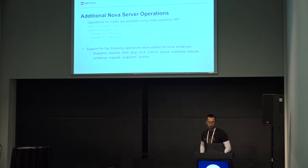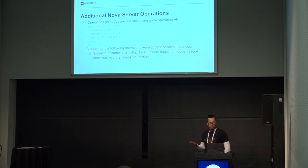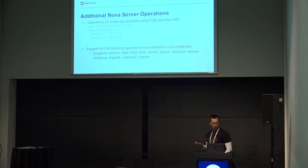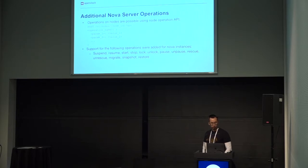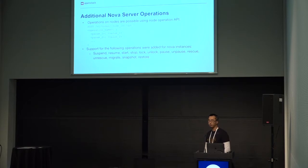The other feature added was additional Nova server operations. As a reminder, you can execute operations on a node using the node operations API, which is a simple POST with an operation name and key-value pairs. In the Rocky cycle, we added support for the following Nova operations on Nova instances: suspend, resume, start, stop, lock, unlock, pause, unpause, rescue, unrescue, migrate, snapshot, and restore.